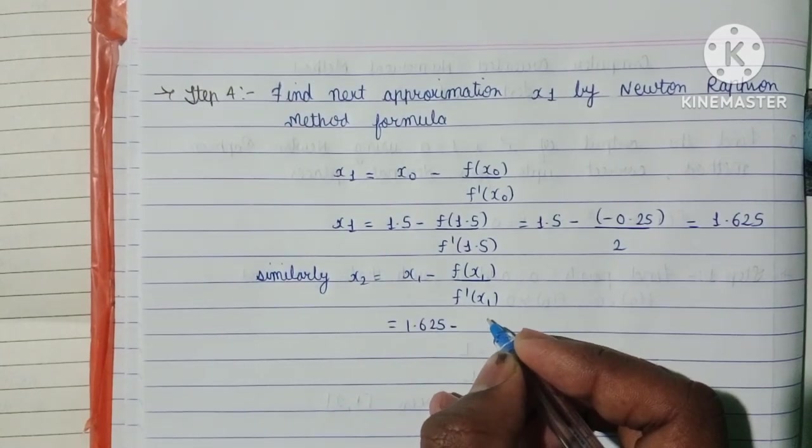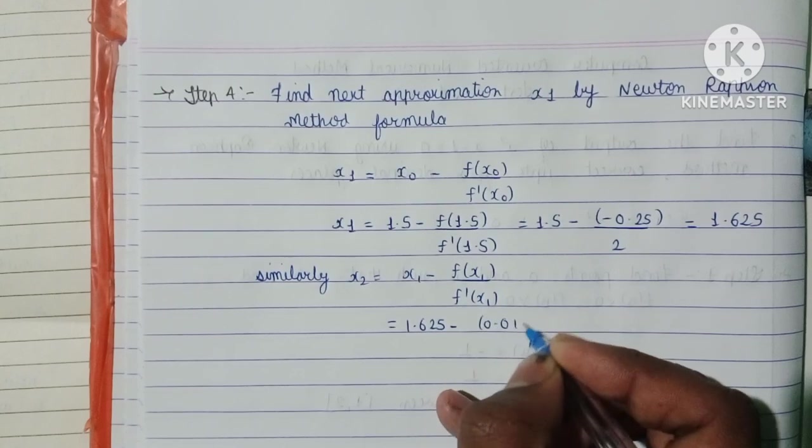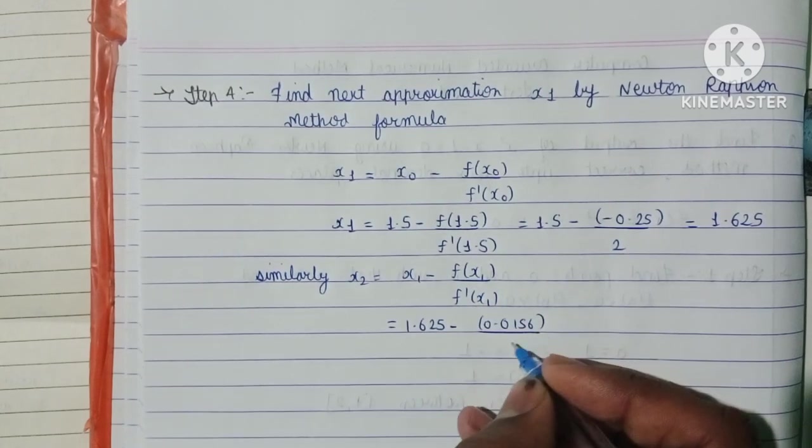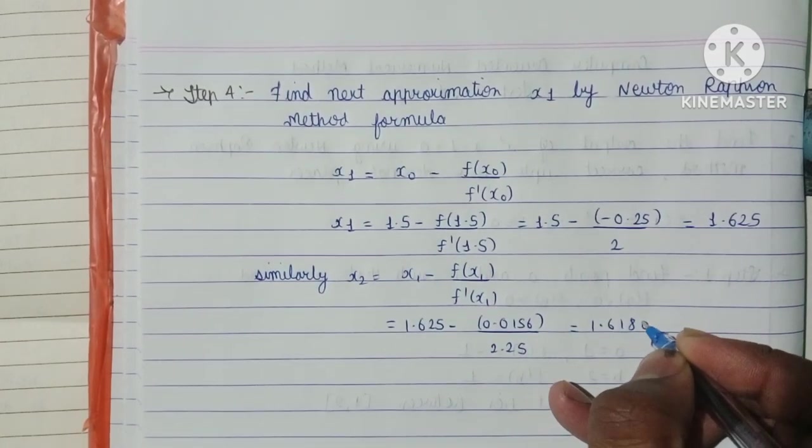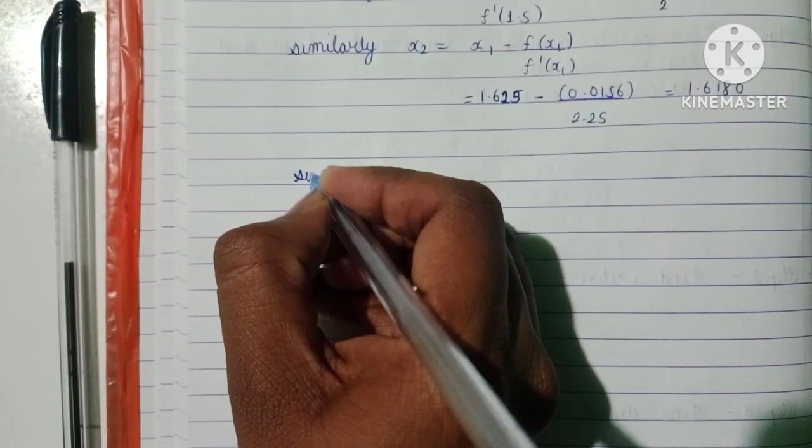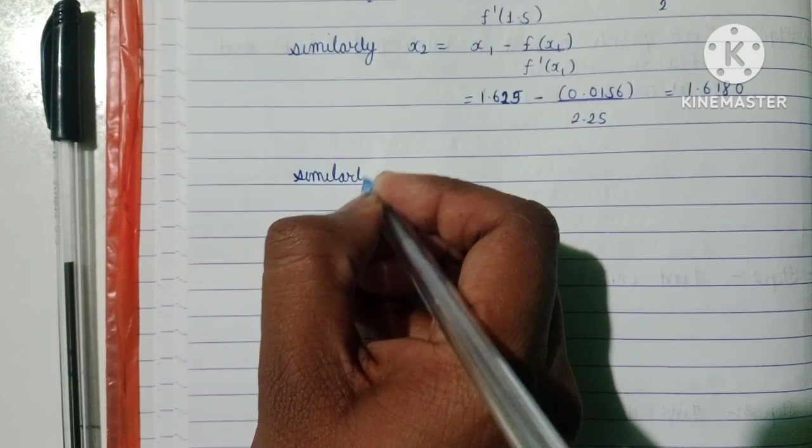This gives x₂ = 1.6180. Now finding x₃ in the same way.